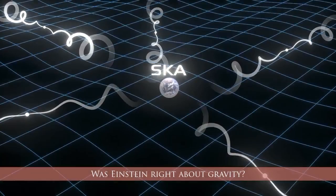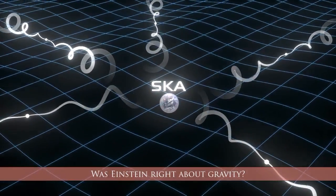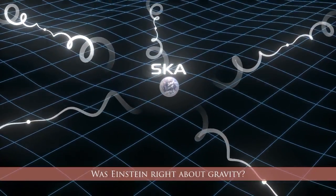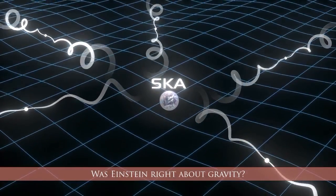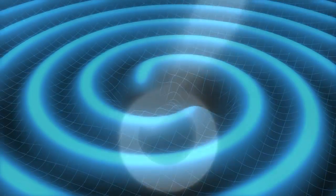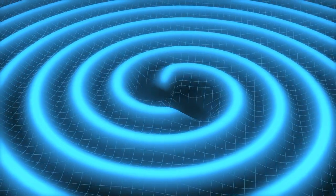The SKA will search for gravitational waves, ripples in the fabric of space-time, by monitoring pulsars, the collapsed spinning cores of dead stars. These gravitational waves are generated when supermassive black holes interact.